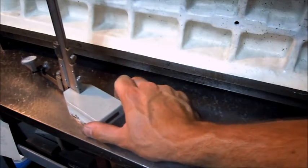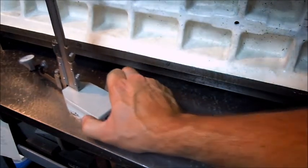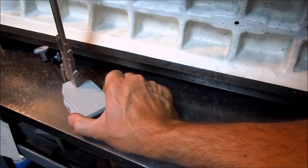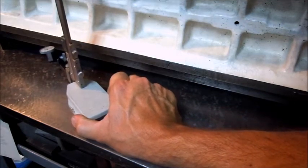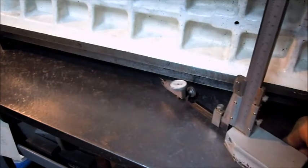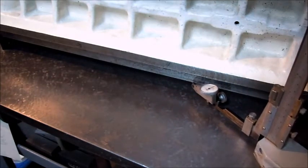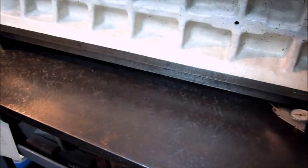So down at either end where the blueing was showing up, the indicator is zeroing out. And then down here towards the center of the table, there's two thou of a bow in it.